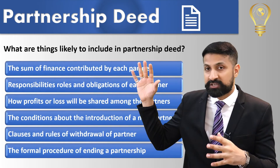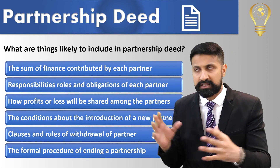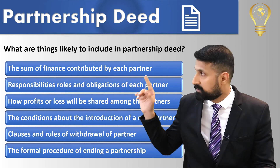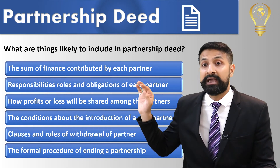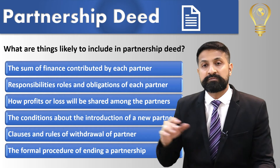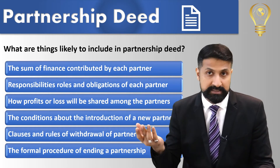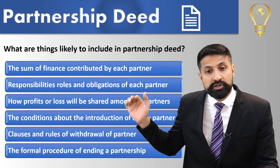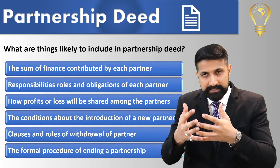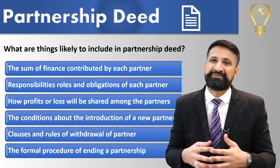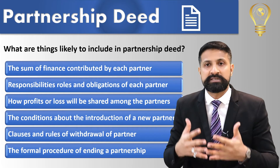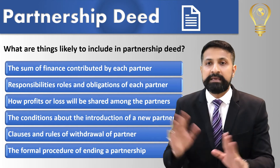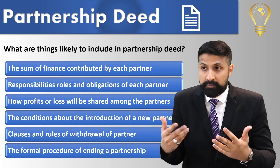Partnership deed میں چیدہ چیدہ چیزیں یہ ہوتی ہیں: sum of finance contributed by each partner — ہر partner نے کتنا پیسہ لگایا؛ responsibilities اور roles کیا ہیں؛ how profit and loss will be shared — profit اور loss کیسے distribute ہوگا؛ اور the conditions about introducing a new partner — کوئی نیا partner آئے تو کن terms and conditions پر آئے گا، مثلاً ہم نے طے کر لیا کہ نئے partner کو 5% سے زیادہ نہیں دیں گے۔